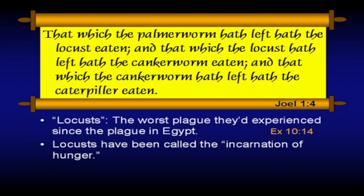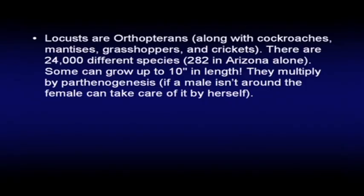The locusts had been called the incarnation of hunger. Locusts are Orthopterans, along with cockroaches, mantises, grasshoppers, and crickets. There are 24,000 different species — in fact, 282 species in Arizona alone. Some can grow up to 10 inches in length. They multiply by parthenogenesis, which means if the male isn't around, the female can take care of it by herself.